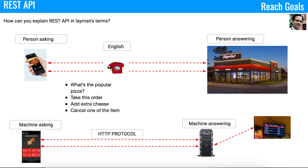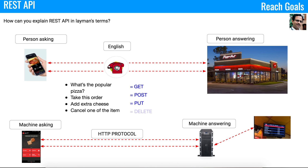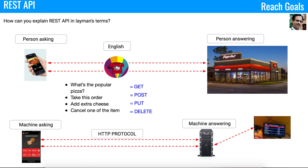Let's see how it works. For 'what's the popular pizza,' the HTTP protocol has a method called GET, which is similar to asking a question. If you want to place an order, there is a corresponding method called POST. Likewise, we have PUT and DELETE, which is equivalent to cancel. These are all well-defined in the HTTP protocol, and that's where the REST API comes into the picture.